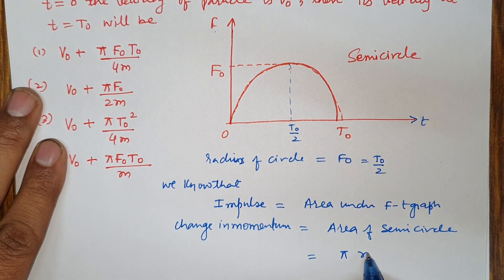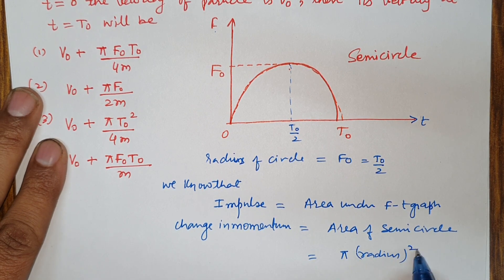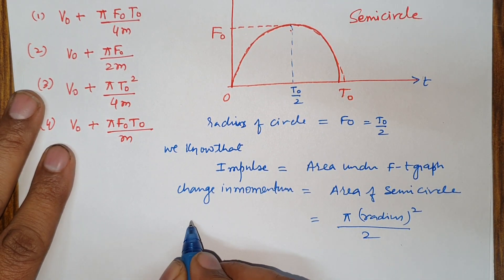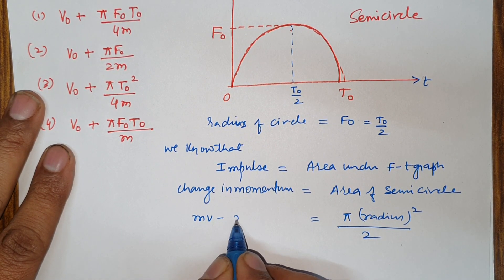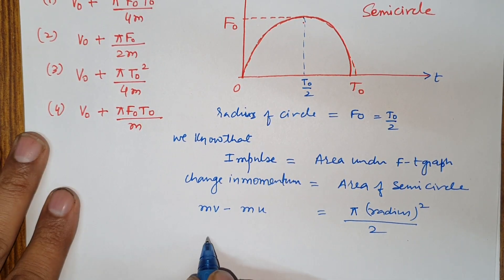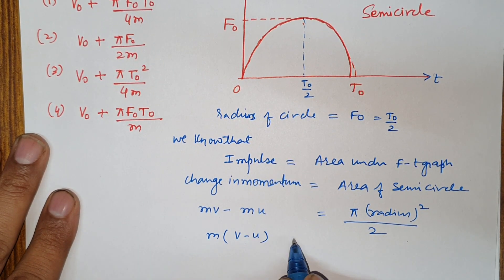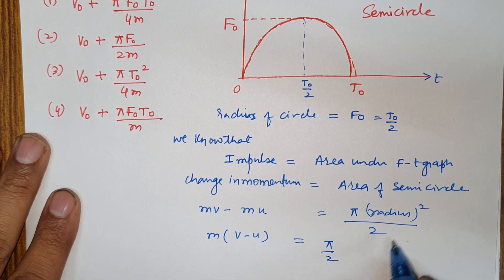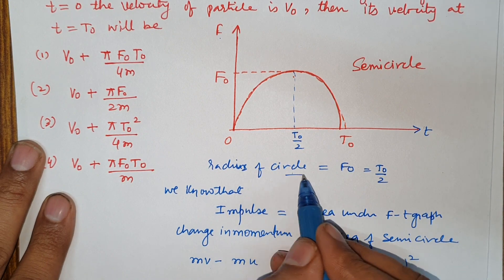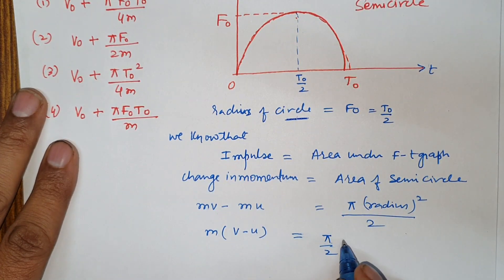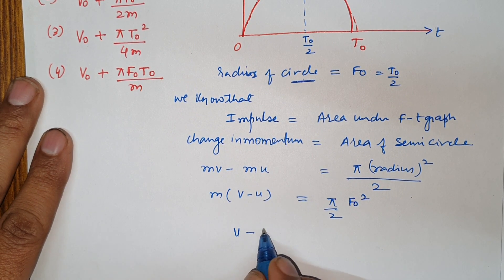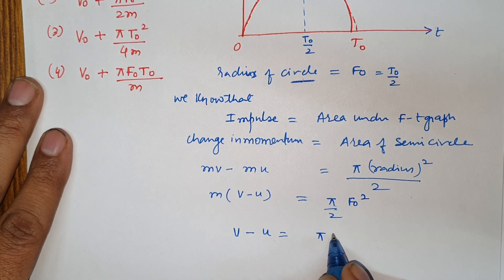Pi radius square by 2. Change in momentum, final momentum minus initial momentum. m common, v minus u is equal to pi by 2, radius, radius of circle f0 square. v minus u is equal to pi f0 square upon 2m.